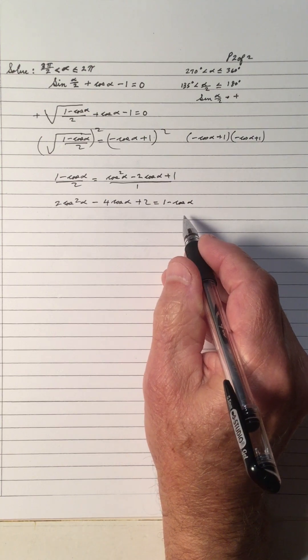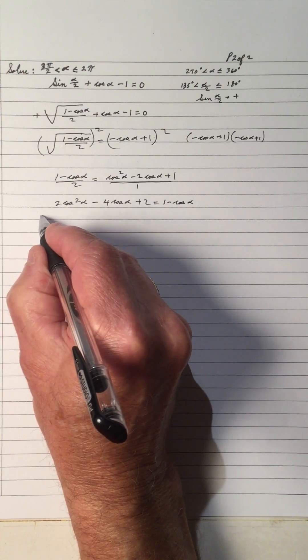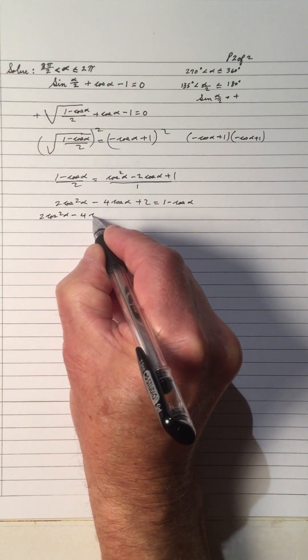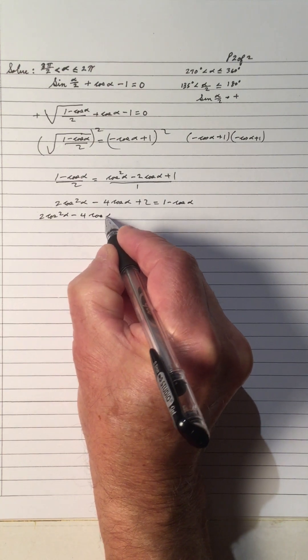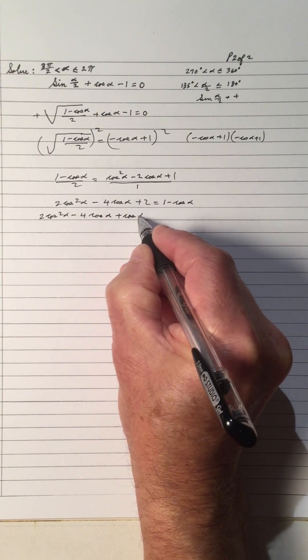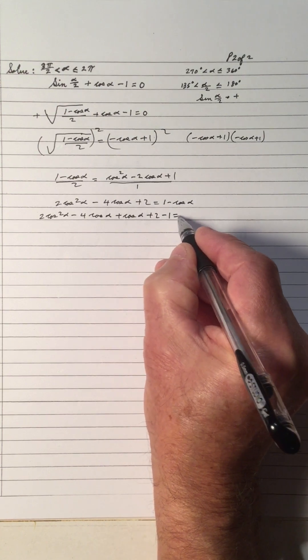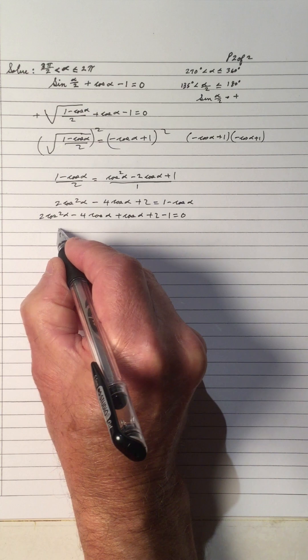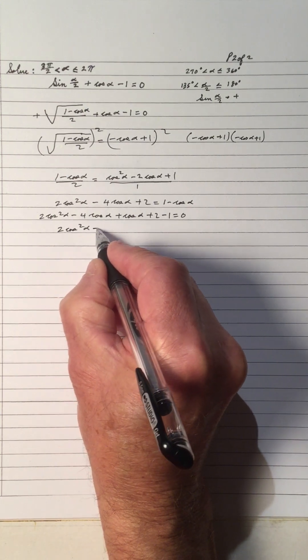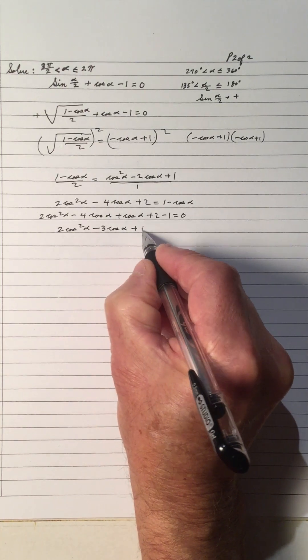Now we isolate all the terms because we've got a quadratic. Move everything to the left side. 2cos²α - 4 cos α, bring this one over, make it plus cos α plus 2, bring the 1 over, make it minus. That simplifies to 2cos²α - 3 cos α + 1.